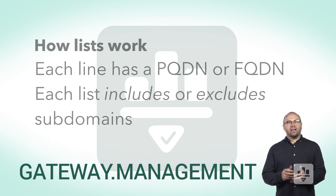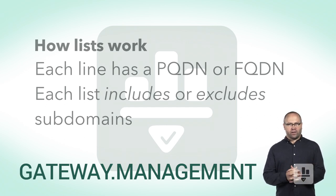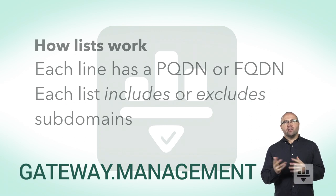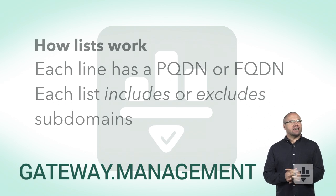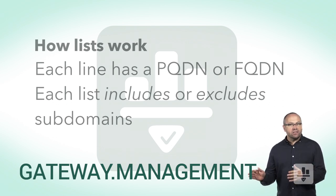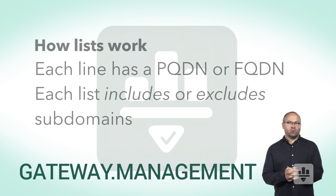Each line in a list consists of a partially qualified domain, often expressed as a PQDN, or a fully qualified domain, often written as FQDN. Furthermore, each list is treated in its entirety to either exclude subdomains or include subdomains.